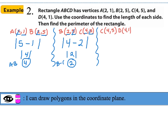Let's find the distance from point C (4,5) to point D (4,1). The x-coordinates are both 4, so we ignore those and find the absolute value difference of the y-coordinates: |5 − 1| = 4. The distance from C to D is 4 units.